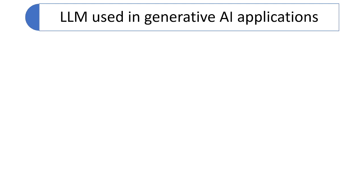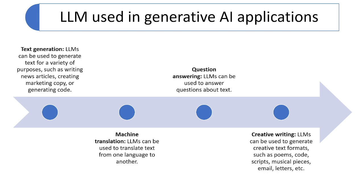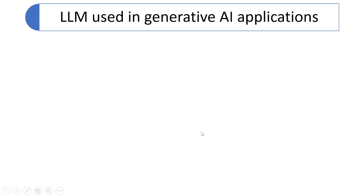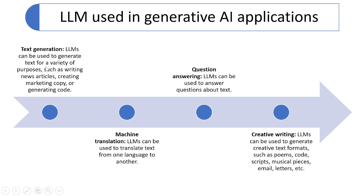Now we will discuss LLM use cases in generative AI applications. First is text generation: LLMs can be used for writing news articles, creative or marketing copy, and generating code. These models are used for email writing, social media blogs, creating marketing advertisements, scripts, and more. For example, if you ask it to write a program for adding two numbers, it can generate the code for you.